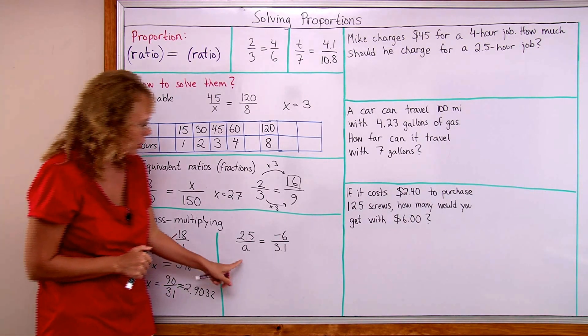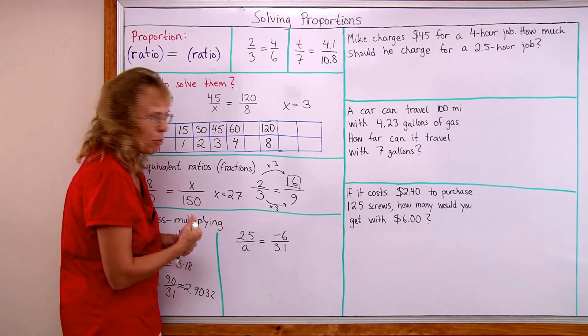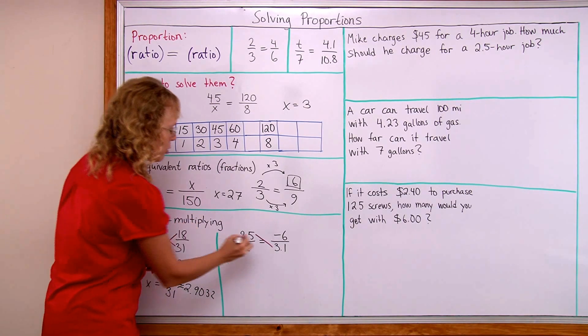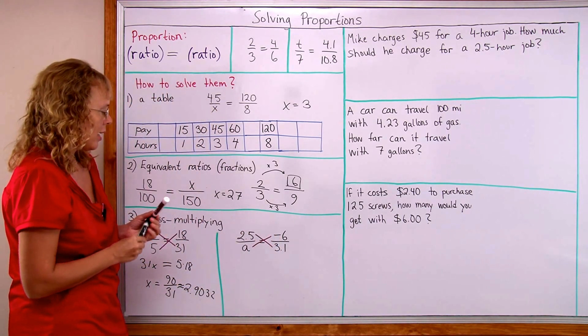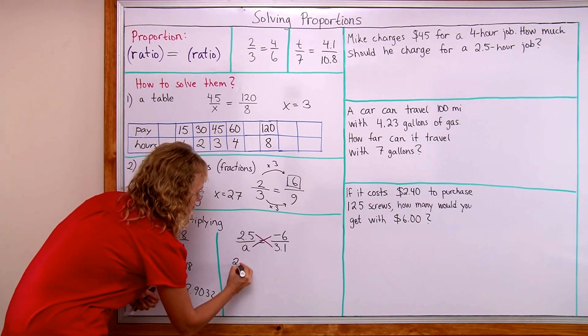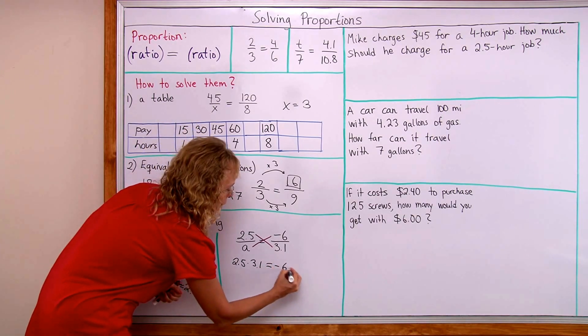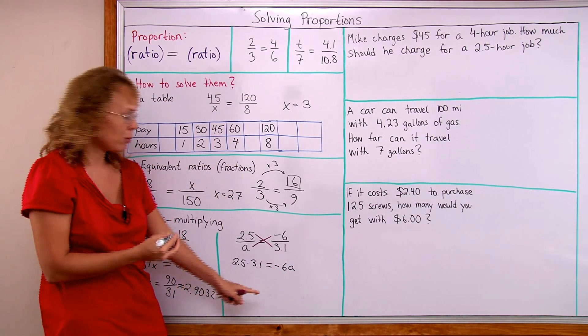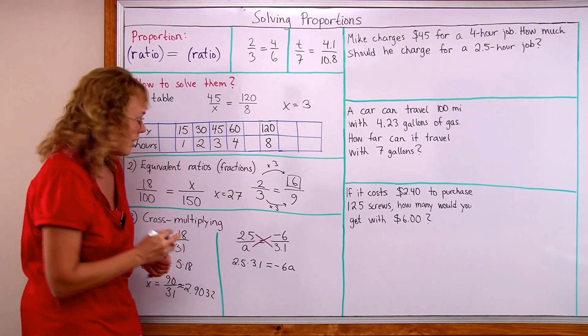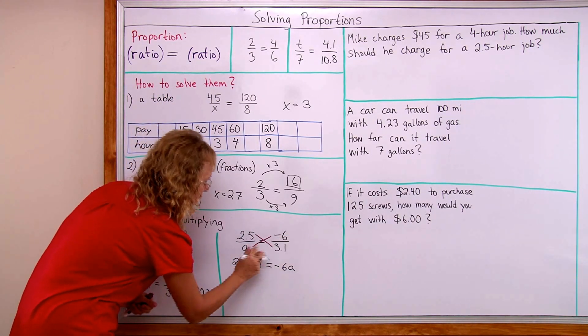I'll solve another proportion here. I just threw together some random numbers and the principle is the same. No matter whether the numbers are negative, it still works. You can write them, for example, this way. 2.5 times 3.1 equals minus 6 times A. And then if you want to, you can switch A so that it is on this side. Or you can start just from the beginning, write your equation so that you get minus 6 A on this side. It doesn't matter.